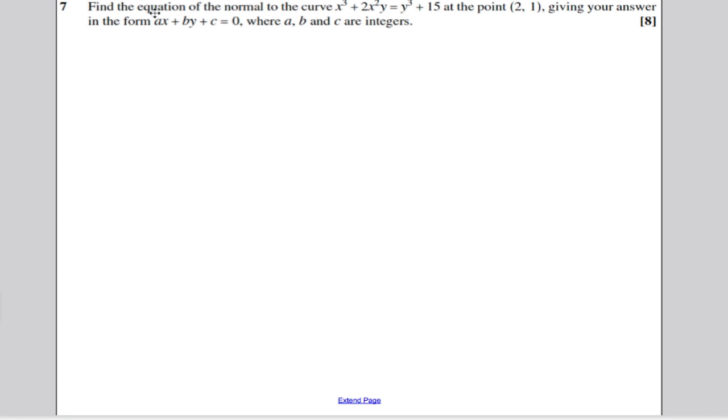Question 7 says, find the equation of the normal to this implicit curve at the point (2, -1) and give your answer in a certain form. Very easy question, 8 marks. I'd be delighted if one like this came up and you just kept your head about you.